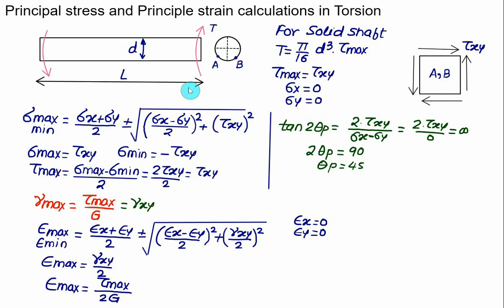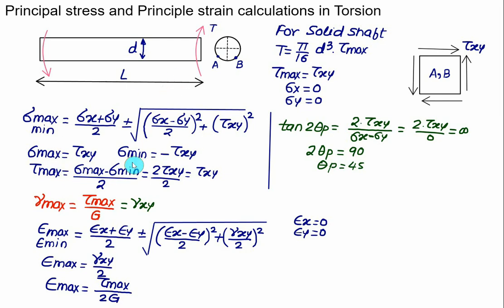This discussion is purely applicable for pure torsion. In the next case, we will apply an axial load passing through the axis of the shaft — either tensile or compressive — which will cause normal stress to develop, changing the state of stress entirely. First, let's practice calculating σ_max, σ_min, and ε_max in the case of pure torsion.